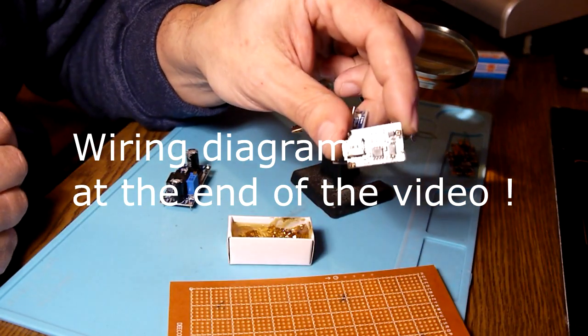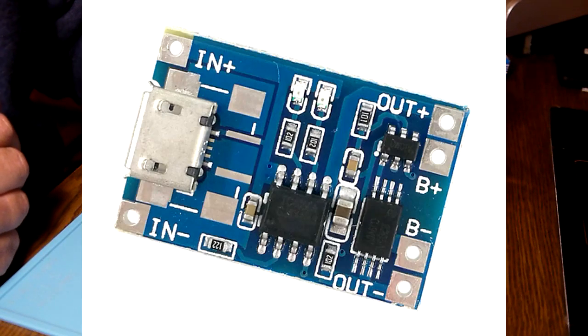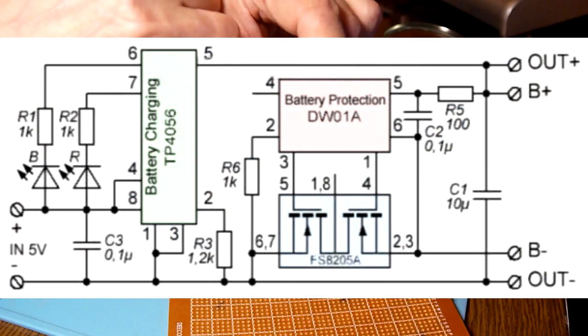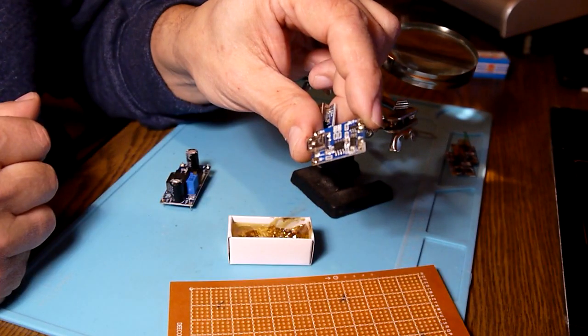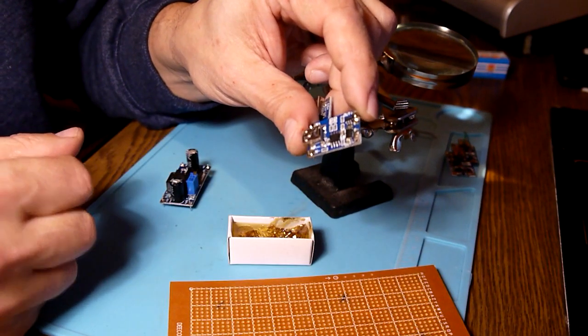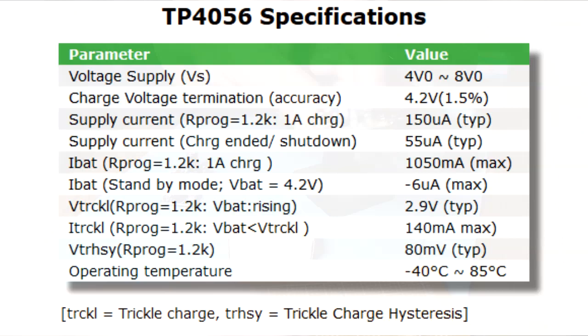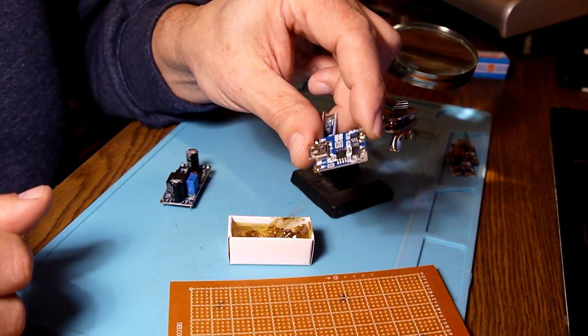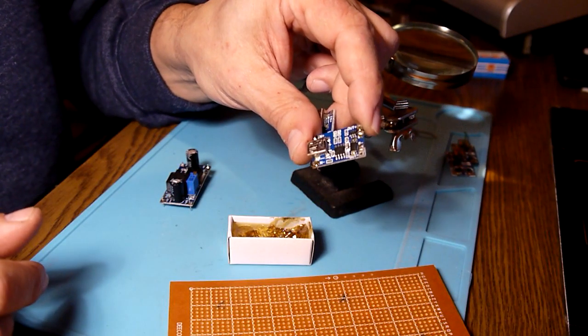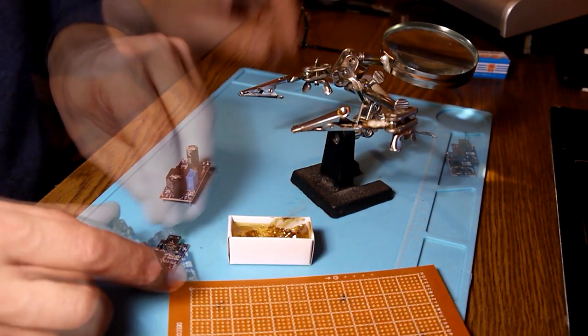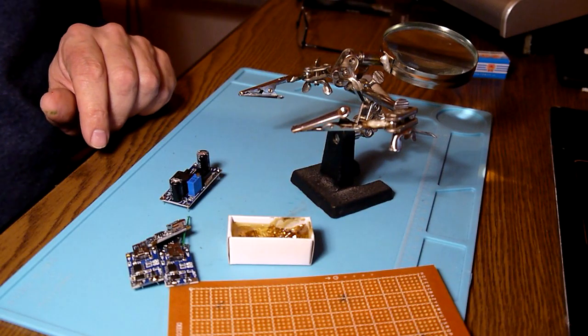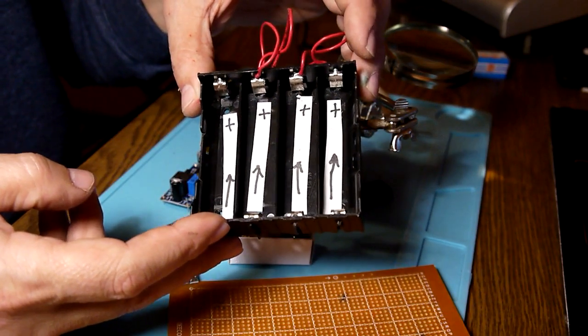I have a few modules like this, charging modules with TP4056, and they also have protection. This little one can charge these cells with one amp, and it's very clever because it knows the right amps and voltage. So it's secure and can be used to charge in a proper way a lithium cell. I have four of these and also one of these holders for cells.